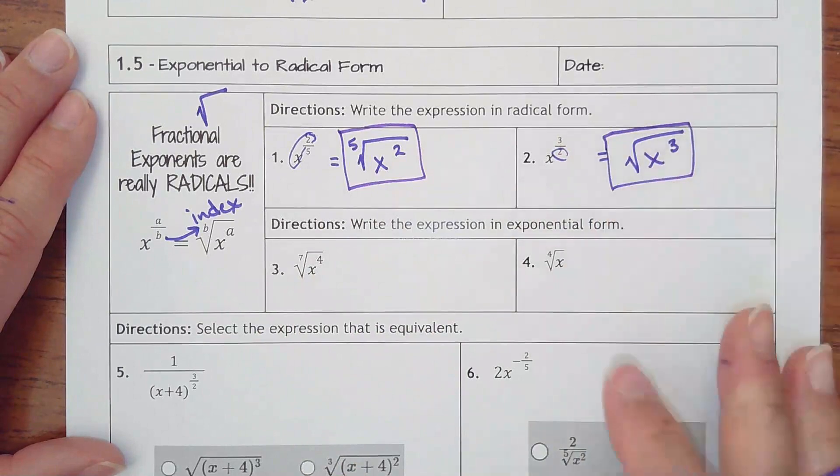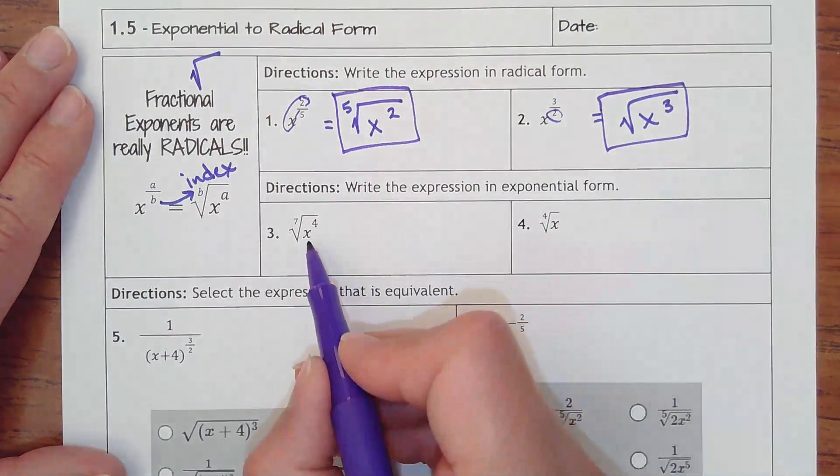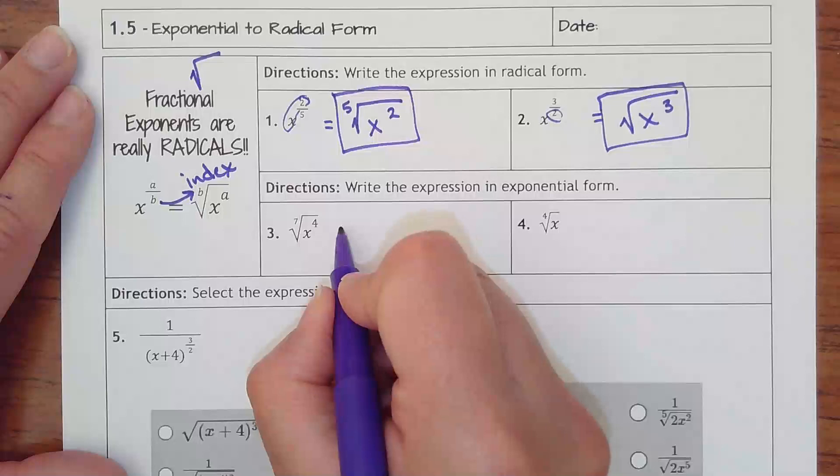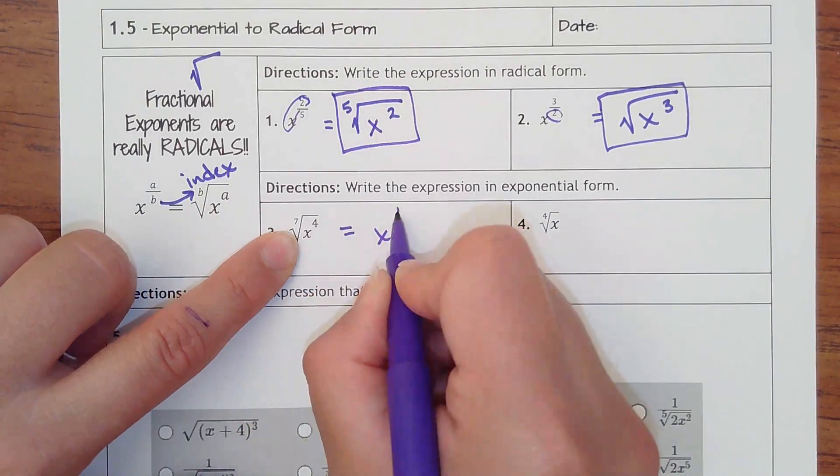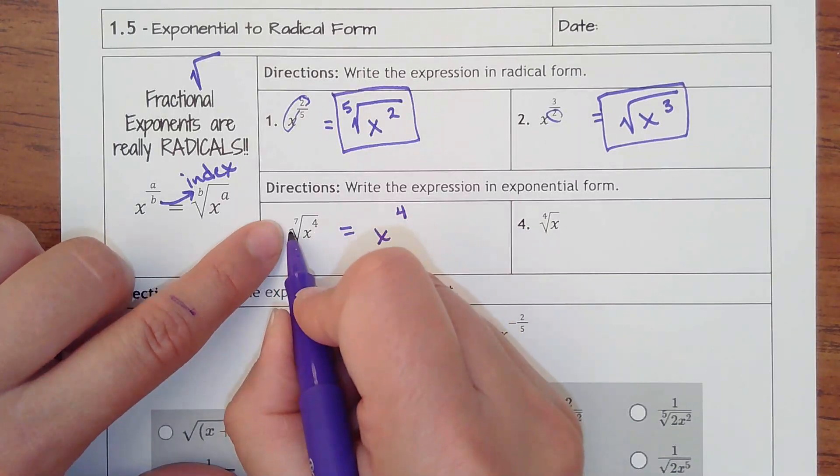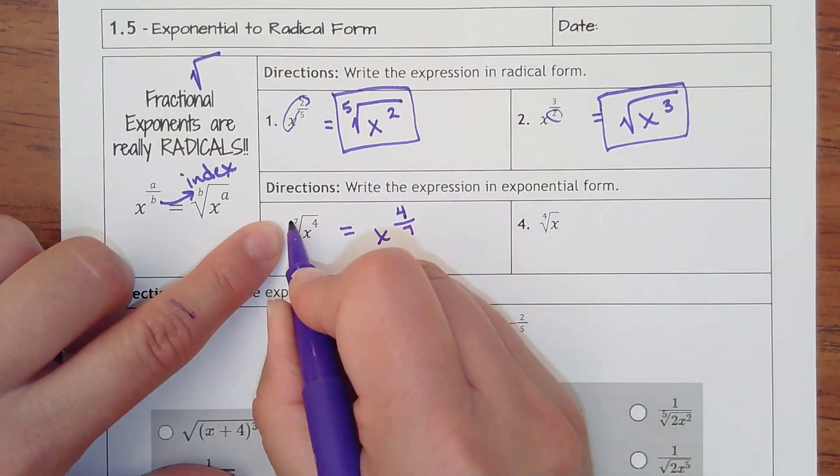And then if you wanted to go the opposite way and take something that's a radical and change it into an exponent, you would have your base is x, the four stays on top of your fraction, and then it's four sevenths.